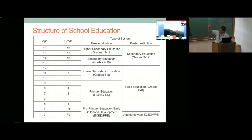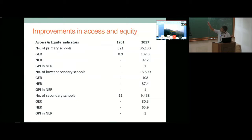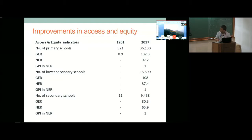On the structure of education: we used to have five years primary plus three years lower secondary, two years secondary, and two years higher secondary — quite common to the region. Now we have eight years of basic and four years of secondary, plus an additional year of ECD. In terms of improvements in access and equity, comparing 1951 and 2017, we see a 111-fold increase in the number of primary schools, an 836-plus fold increase in secondary schools, gender parity met, enrollments almost universal at primary level and increasing at secondary.